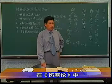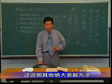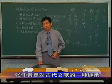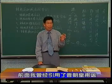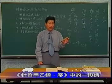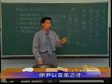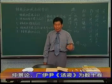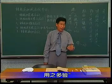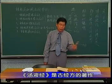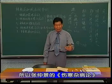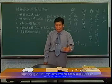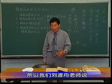在伤寒论中有新加汤这张方子，这说明其他绝大多数方子张仲景是对古代文献的一种继承。前面我曾经引用了《针灸甲乙经》序中的一段话说：伊尹以亚圣之才，钻用神农本草，以为汤液，仲景论广伊尹汤液为数十卷，用之多验。汤液经是古经方的著作，所以张仲景的《伤寒杂病论》大量地继承了汤液经中复方的成就。而这个方子把它叫做新加汤，至于刘渡舟老师说，这是张仲景自己家的一个方子，他在古汤液经的桂枝汤的基础上，把芍药生姜的量各加一两，再加上人参，因为他是自己新创的方子，所以他叫新加汤。